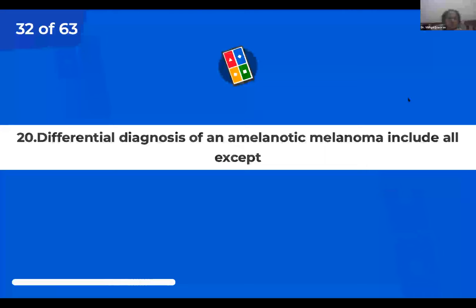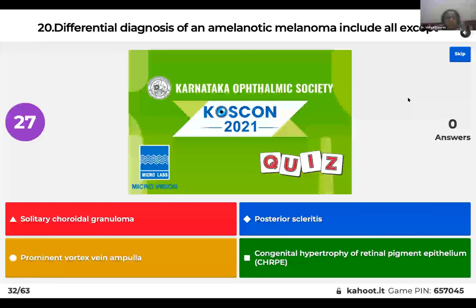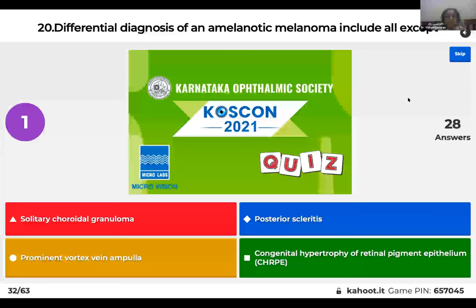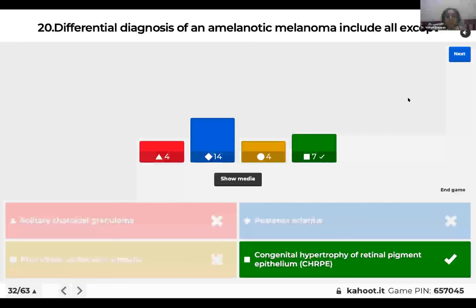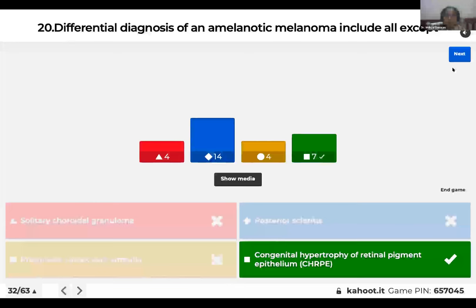Question 20: Differential diagnosis of amelanotic melanoma includes all except: solitary choroidal granuloma; posterior scleritis; prominent vortex vein ampulla; or congenital hypertrophy of RPE (CHRPE)? CHRPE is a differential for a pigmented or melanotic melanoma, not amelanotic. Solitary choroidal granuloma, posterior scleritis, and prominent vortex vein ampulla appear pale and can mimic amelanotic melanoma. A vortex vein ampulla will disappear when pressure is applied to the globe.